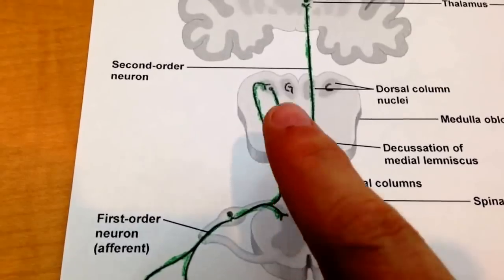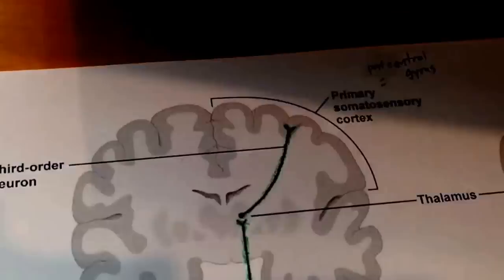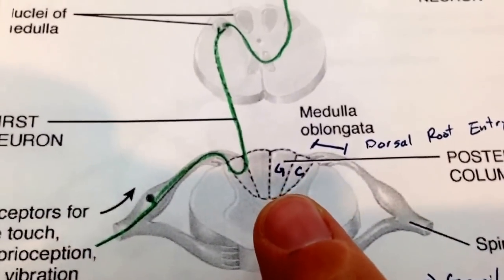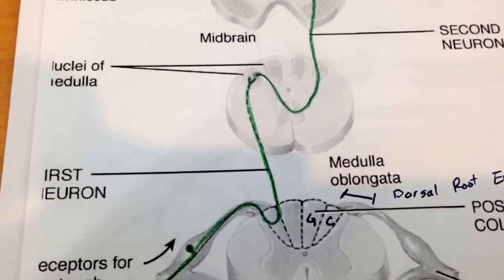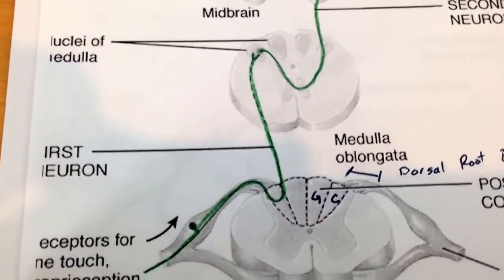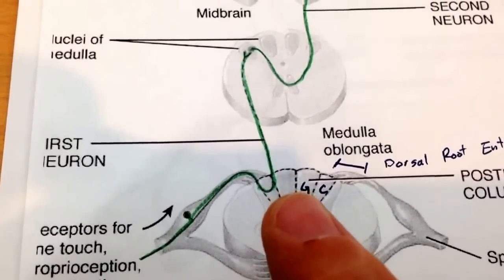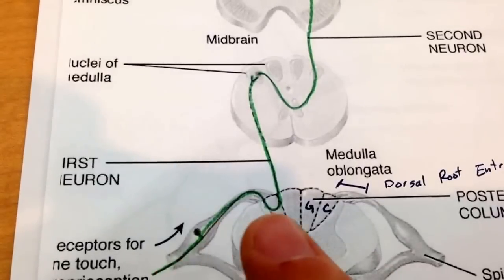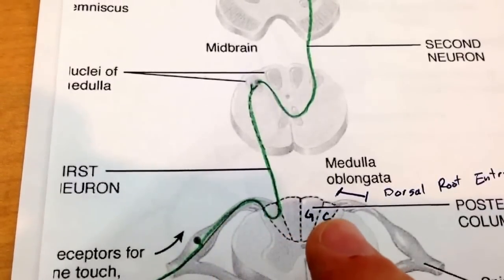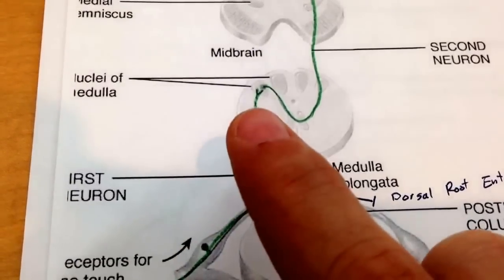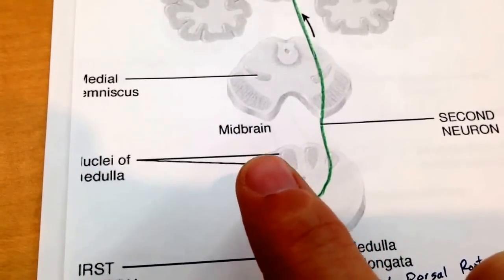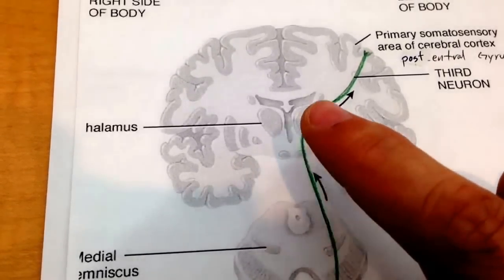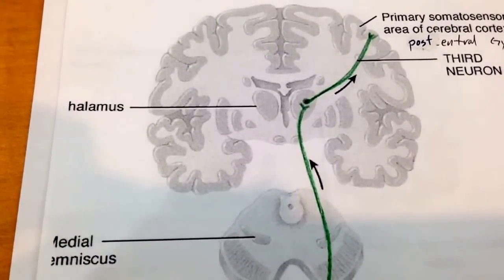After entering, the signal travels up on the same side. There are two parts to the dorsal column: the gracile (labeled G), and the cuneate. Sensory information from the lower limbs goes into the gracile column, and in the lumbar spine the cuneate column doesn't exist yet. Moving up to the upper limbs, that sensory information goes into the cuneate column. They stay on the same side until they reach the medulla, where they synapse and then decussate, continue up to synapse again at the thalamus, and then travel to the post-central gyrus — the somatosensory cortex.